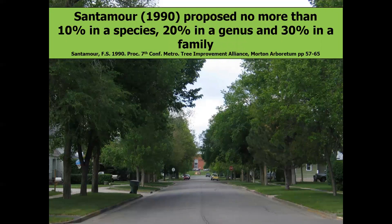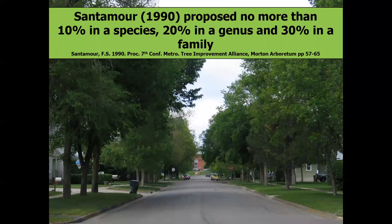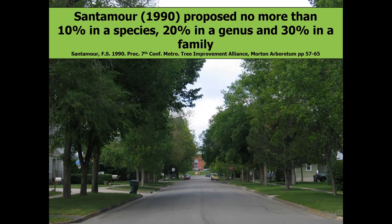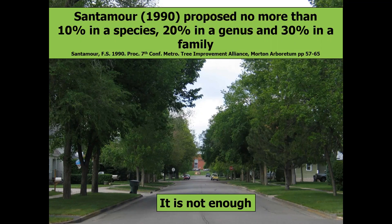Santamour, back in 1990, proposed no more than 10% of your trees in any one species, no more than 20% in a genus, and 30% in a family. For a lot of communities this has been considered the standard. But I say it's not enough. Even Santamour in his own writings did not look at this as gospel — he just meant it as a general statement that we need to diversify. But as he pointed out, it still may not be enough.